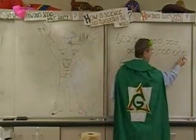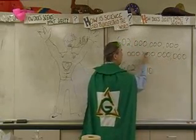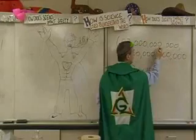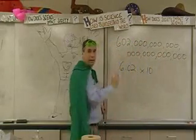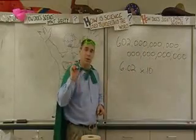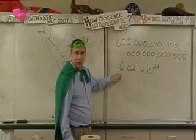From here, a decimal. 1, 2, 3, 4, 5, 6, 7, 8, 9, 10, 11, 12, 13, 14, 15, 16, 17, 18, 19, 20, 21, 22, 23. So I had to move the decimal over 23 times. And there's the number in scientific notation. 6.02 times 10 to the 23.